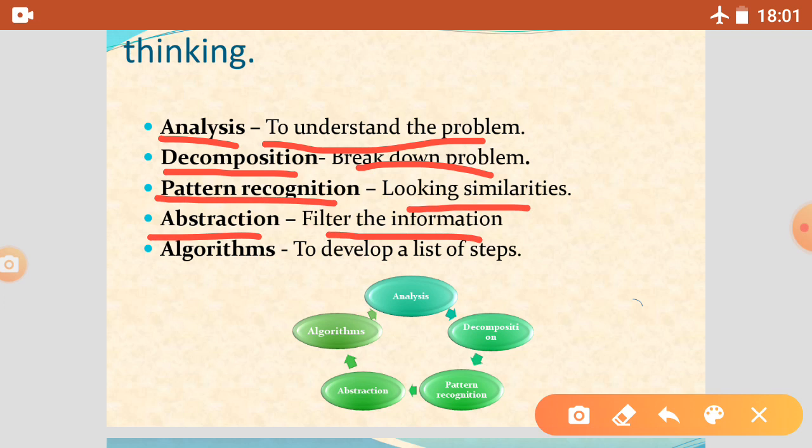After that comes the algorithm. In algorithm, we make a list of steps — which step we have to take first, and then which type of steps we have to follow. These things we develop in algorithms.